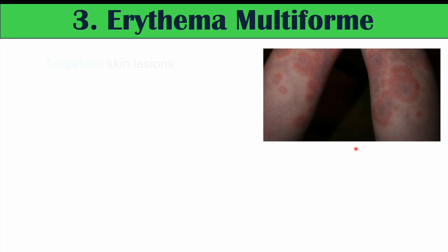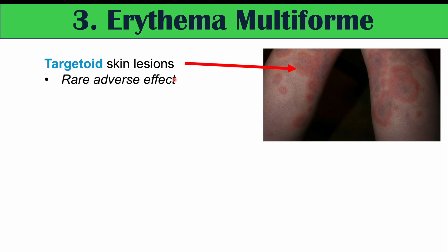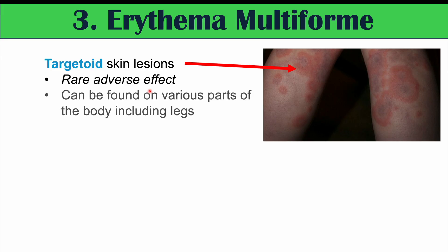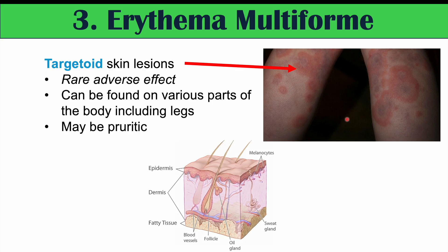The next skin finding that may occur in some patients taking amlodipine is erythema multiforme. Erythema multiforme is a condition where there are skin lesions that look like bullseyes — targetoid skin lesions. This is a rare adverse effect of amlodipine use. It can be found on various parts of the body, including the legs, and it may be pruritic, meaning itchy as well.